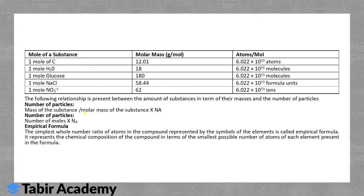The relationship between amount of substance, mass, and number of particles: Number of particles = (mass of substance / molar mass) × Avogadro's number. Equivalently, number of particles = number of moles × Avogadro's number. For example, if I have five moles, I multiply that by Avogadro's number to get the total number of entities.